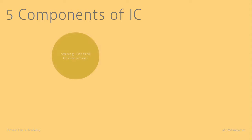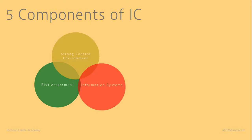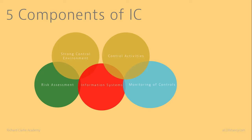First, you need a strong control environment, which means management need to ensure that people deliver the internal controls. We need to assess the risk of things going wrong. We need information systems — that can be the accounting system or any system the company uses. We need to monitor those controls on a timely basis, because if we don't find out things are going wrong early on, it could be too late.